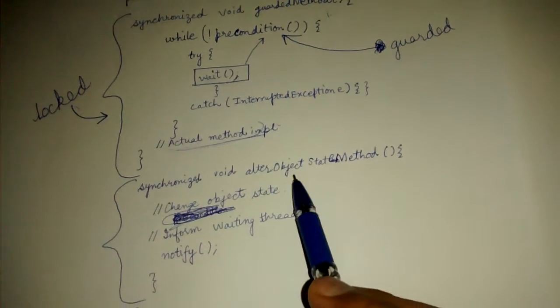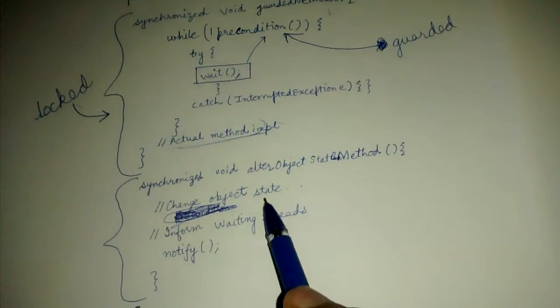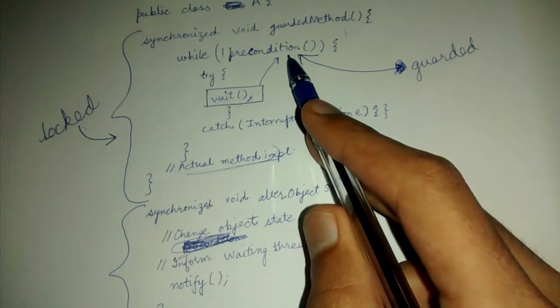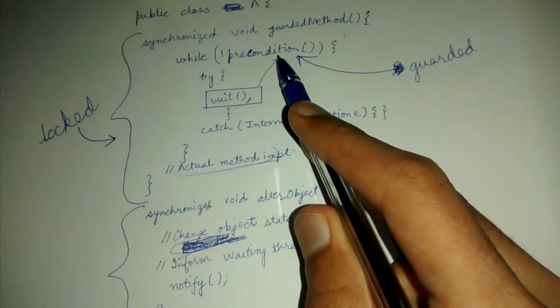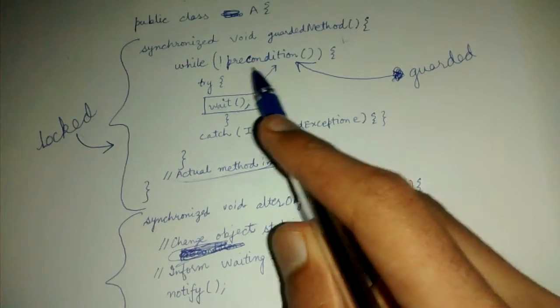Other thing is it is protected by a guard, which is the precondition. Whenever we alter the object state, we change the object state and we again notify. So it will again check whether this precondition is true or false. If it is still false, then it will again go and wait.